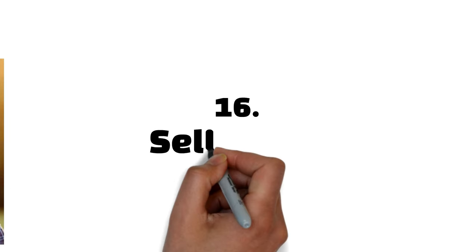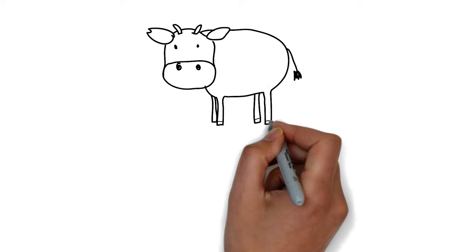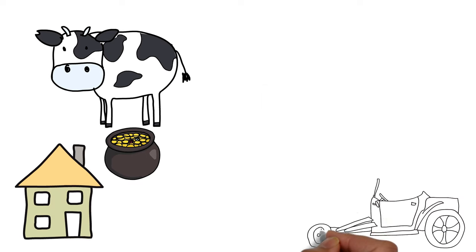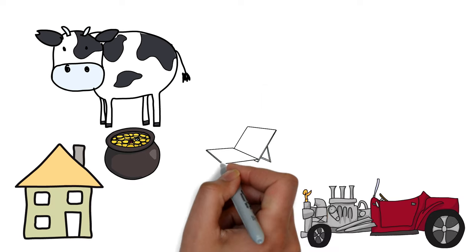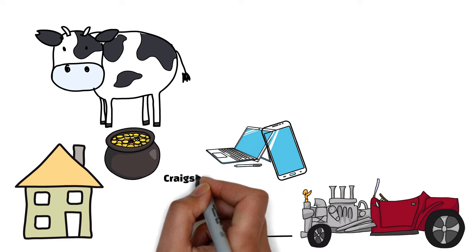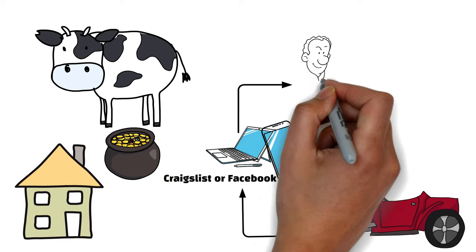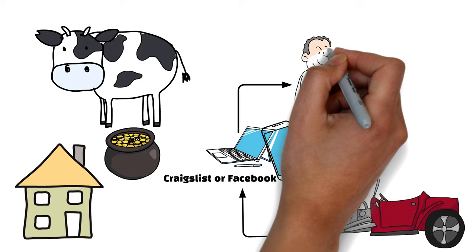Sixteen, sell junks. Whatever thing you've got lying around your home has the potential to fetch you some money. Rather than let such items waste away, put them up for sale on platforms like Craigslist or Facebook Marketplace. It's a cheap, easy way to make some extra cash and also free up space in your home.